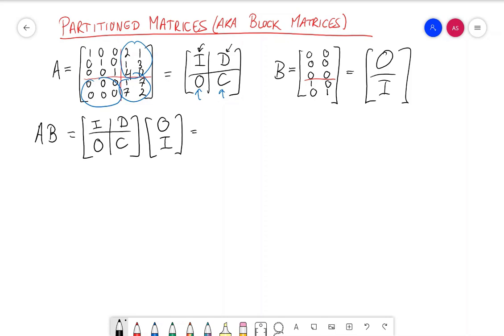When I multiply this, my top row is going to be I times O plus D times I. It is not O times I here. In this case, it'll be the same matrix, but in general, that won't be the case.